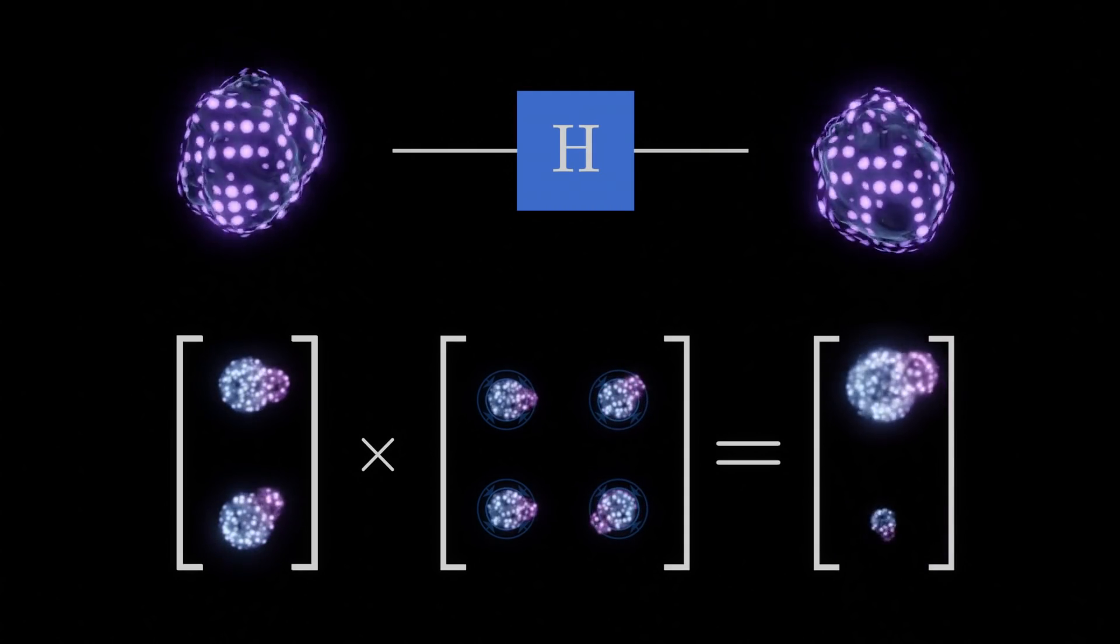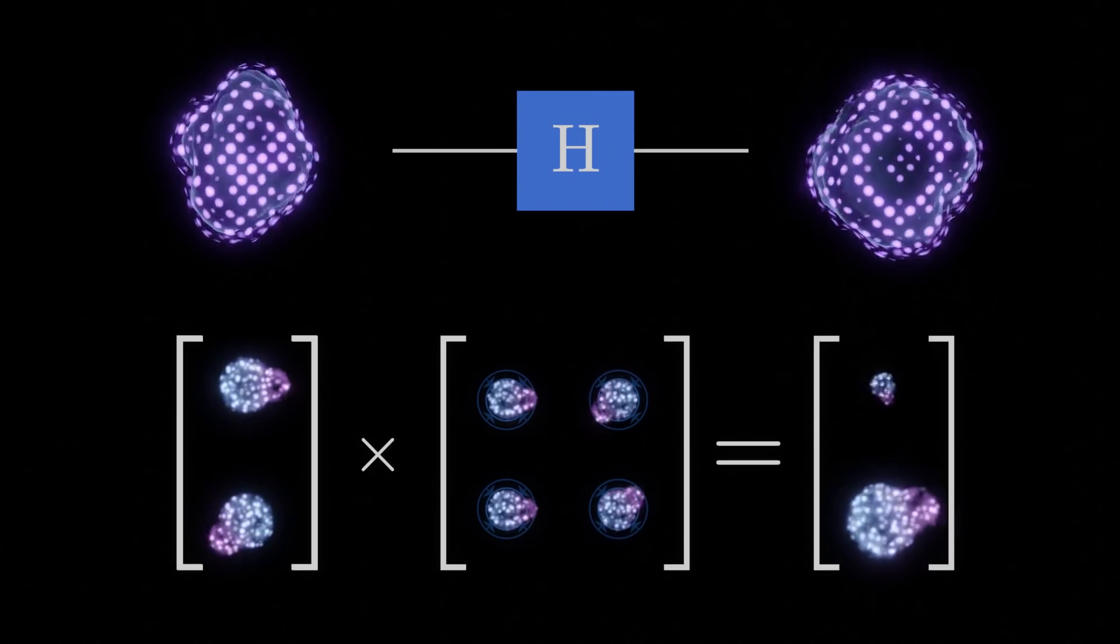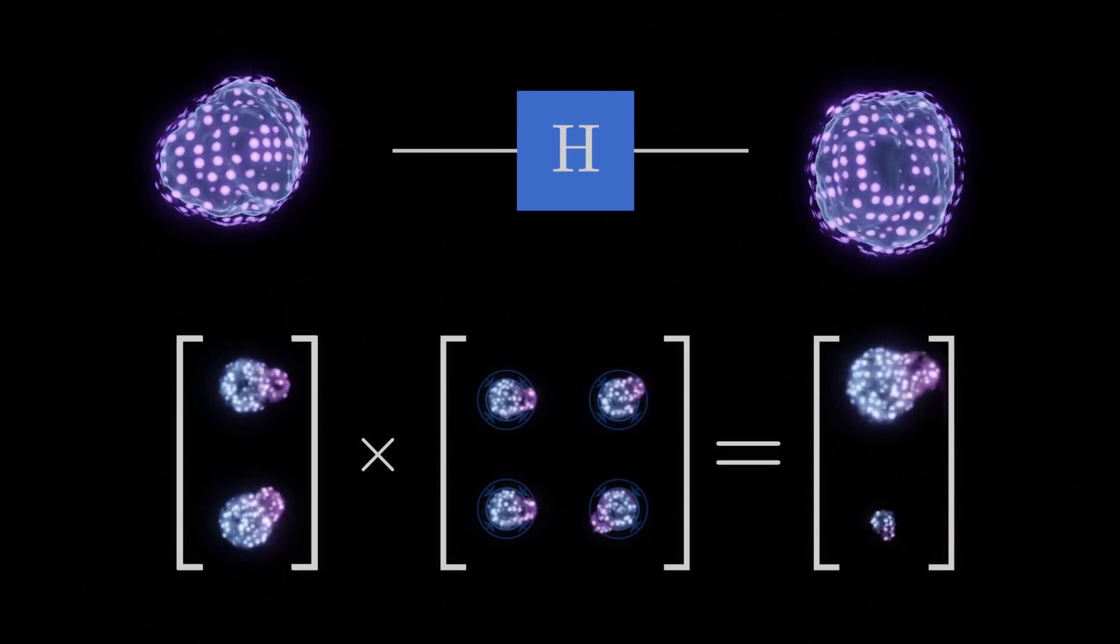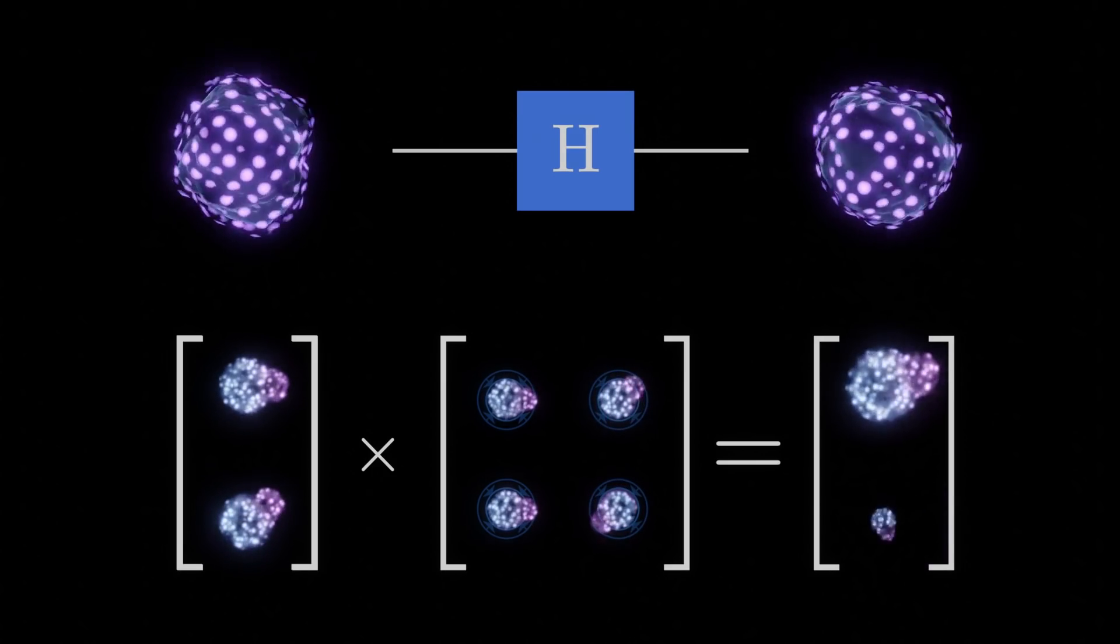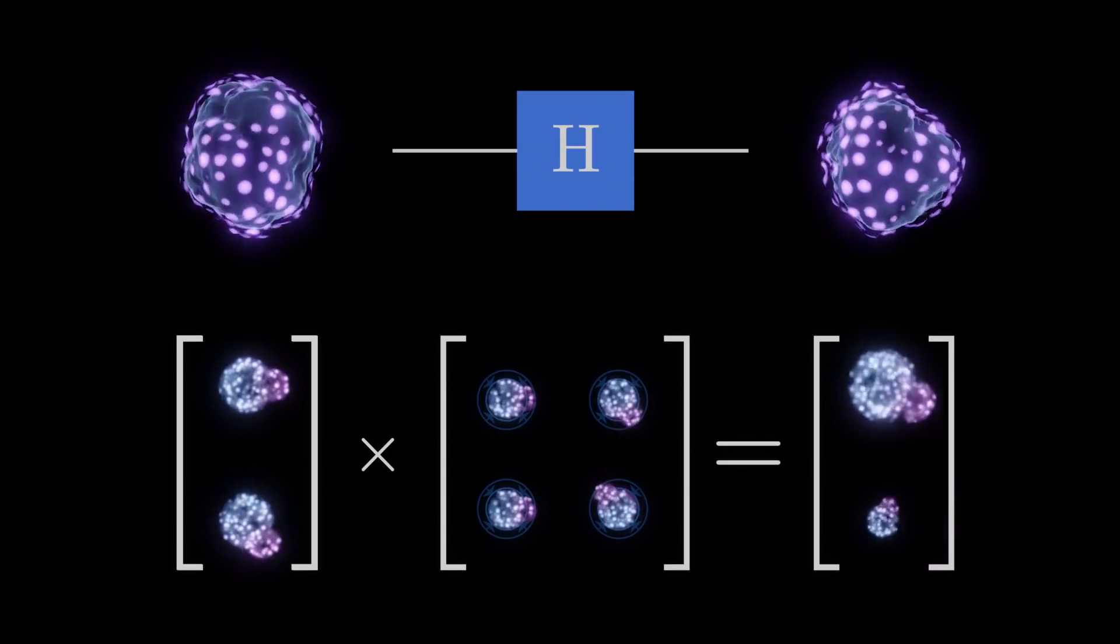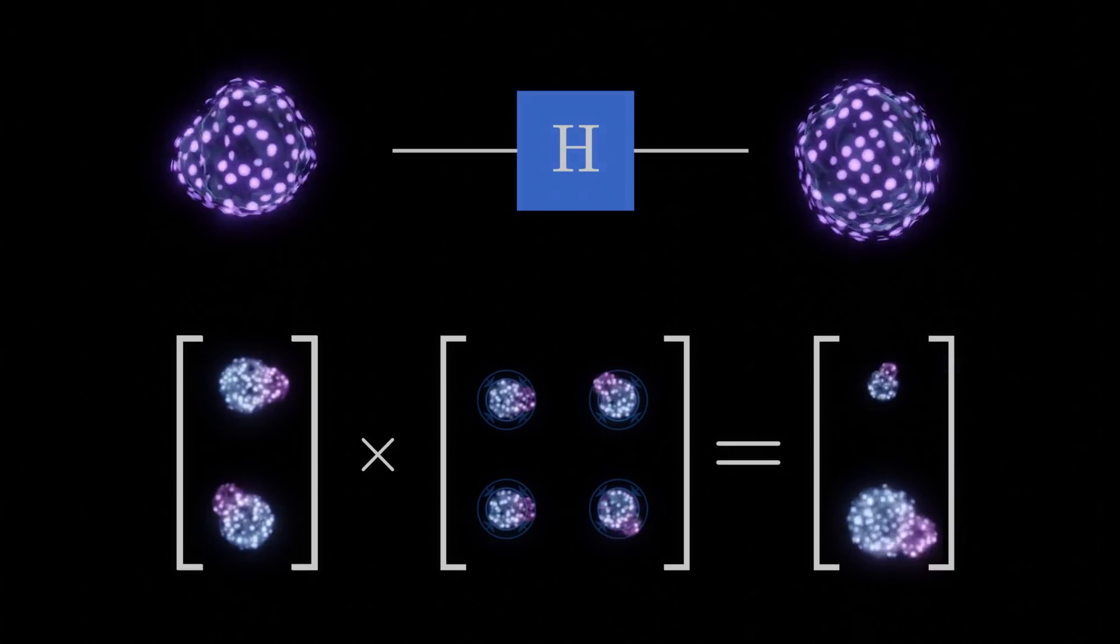While there are many other quantum logic gates, each described by their own matrix, we will not need many more of them for the algorithm that we will explore today. However, the remaining logic gates we need are gates that act on more than one qubit at a time. To understand how these work, we first need to look at the principle of entanglement.